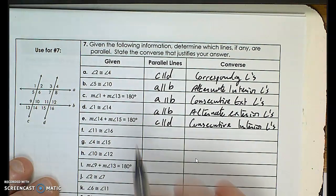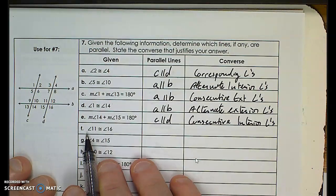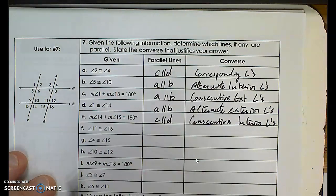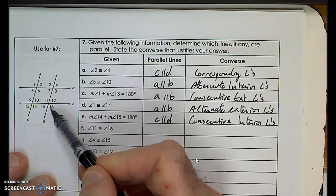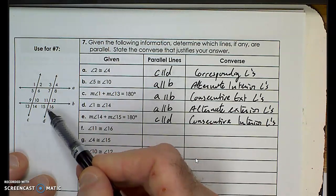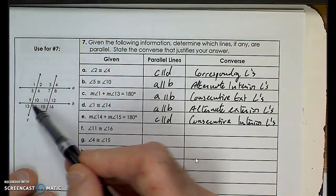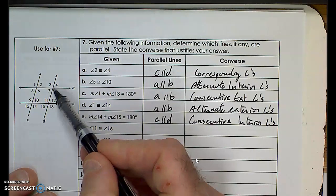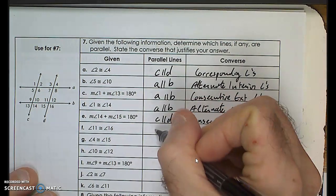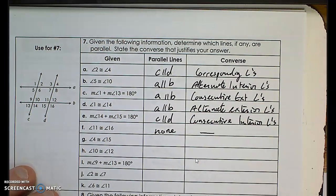Given angle 11 and angle 16: right away we see they're in the same intersection. When using angle pairs to prove parallel lines, we must compare angles from two different intersections. Since both angles are at the same intersection, this tells us nothing — we cannot prove any two lines are parallel from this information.